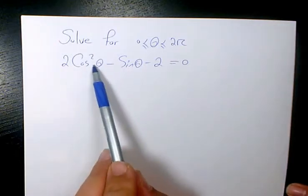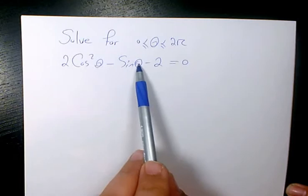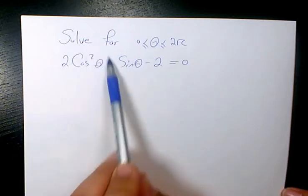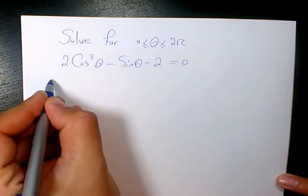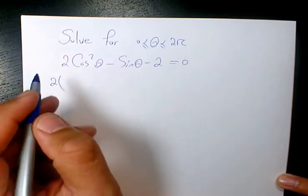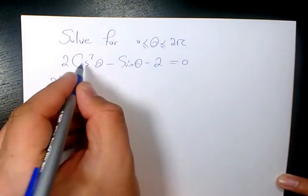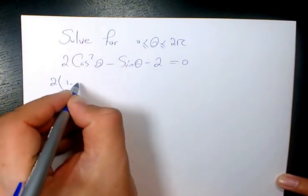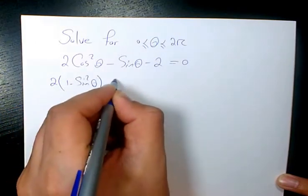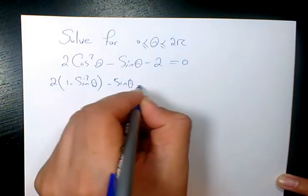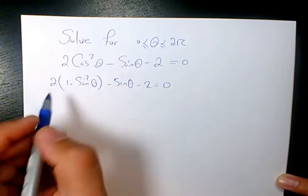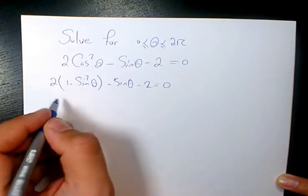First thing I need to convert cosine to sine because here we have sine and I need to change this cosine squared to sine squared. We know sine squared plus cosine squared is 1, so instead of cosine squared I write 1 minus sine squared theta minus sine theta minus 2 equals to zero.